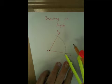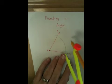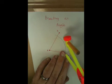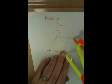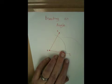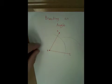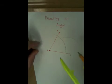line segment BC, and from here sweep another arc without changing the size of the compass. Make sure you don't change the size.